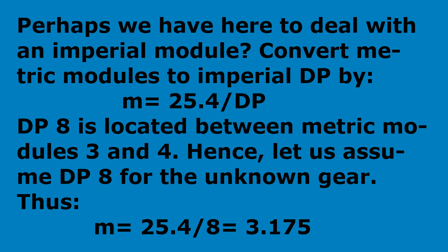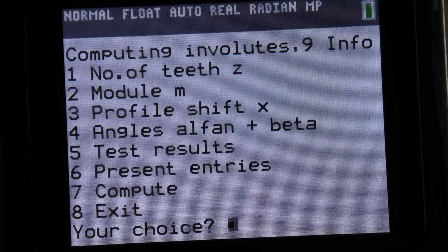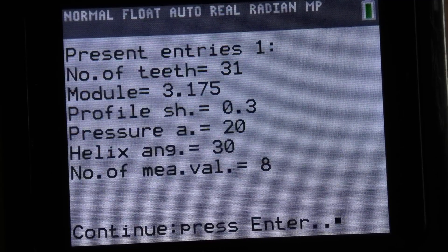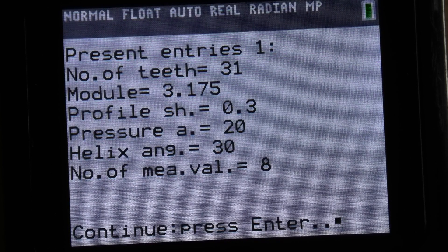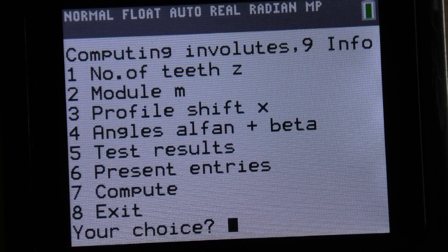Perhaps we have here to deal with an imperial module? Convert metric modules to imperial DP by M equals 25.4 divided by DP. DP8 is located between metric modules 3 and 4. Hence, let us assume DP8 for the unknown gear. Thus, M equals 25.4 divided by 8 equals 3.175. And we will add a profile shift of 0.3 to reach the outside diameter. In fact, we have skipped the step computing the involute with M equals 3.175 and no profile shift.